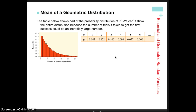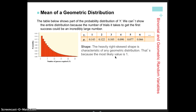The probability decreases as the number of trials increases — the probability of success gets much smaller. So we're going to have a strongly right-skewed distribution, and this will be the case every time we have a geometric distribution. Going back to chapter one vocabulary, we want to describe the distribution by looking at shape — which we just covered — and then center.